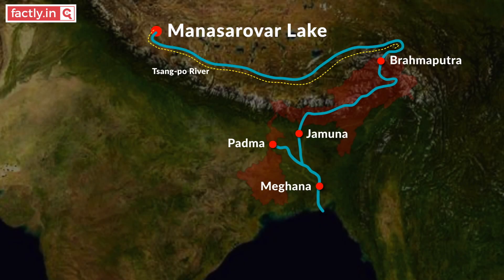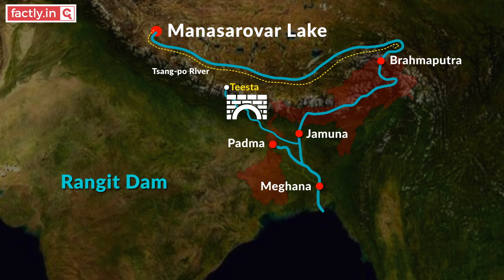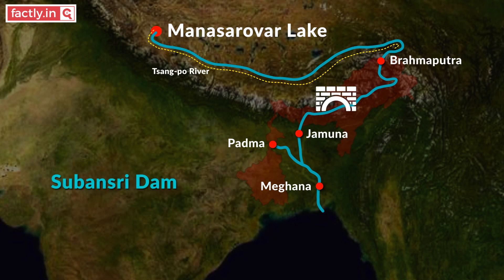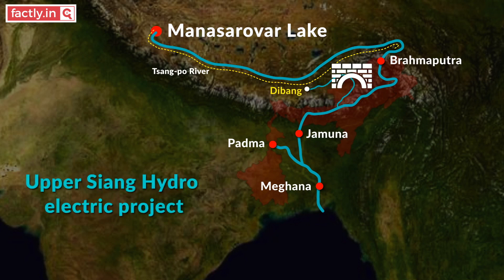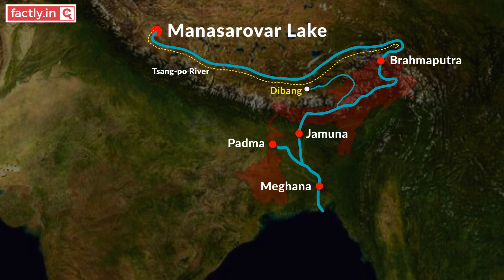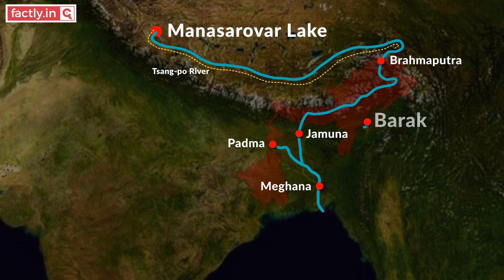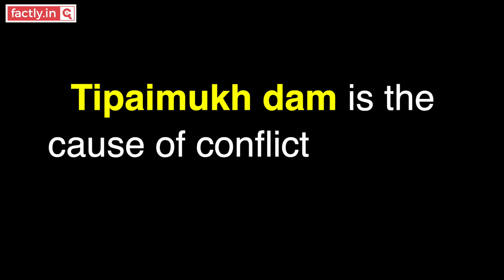Major projects on the Brahmaputra river system include Rangit Dam on Rangit river (a tributary of Tista), Ranganadi Dam in Arunachal Pradesh, Subhansiri Dam, and Upper Siang Hydroelectric Project. The dams being constructed by China upstream of Brahmaputra are a matter of concern for India. The to-be-completed Dibang Dam on Dibang river would be the world's tallest concrete gravity dam after completion. Barak is a river in northeastern India flowing through Nagaland, Manipur, Mizoram, and Assam before entering Bangladesh. It is one of the richest biodiversity zones in the world. The long-pending Tipaimukh Dam is a cause of conflict between India and Bangladesh.